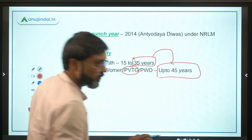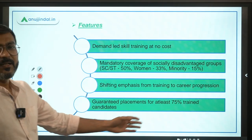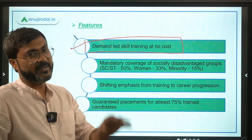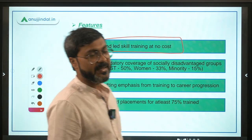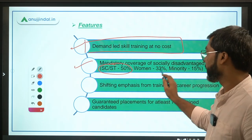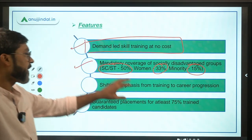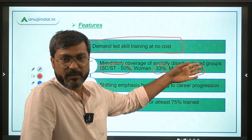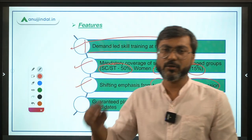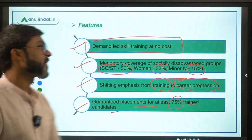PVTG stands for Particularly Vulnerable Tribal Groups. Key features of the scheme: skill training is provided at no cost — not even one rupee is charged from the beneficiary. Mandatory coverage is also required: 50% of beneficiaries should be SC/ST, 33% should be women, and 15% should be minorities. The scheme shifts emphasis from training to career progression, guaranteeing placement for at least 75% of trained candidates.